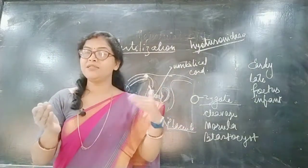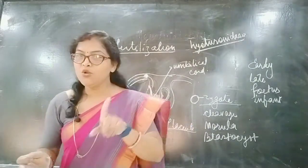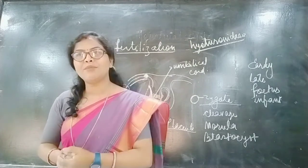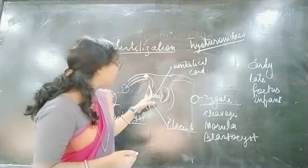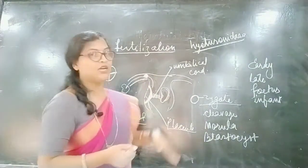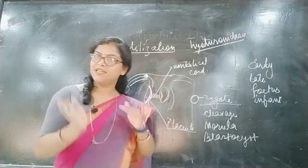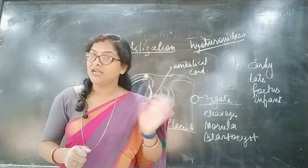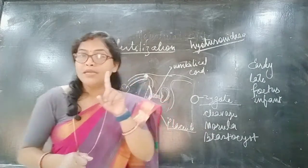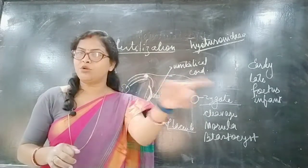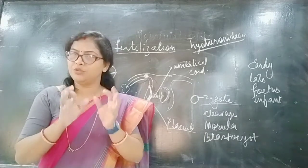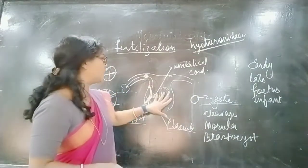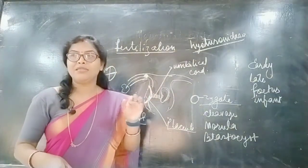The placenta is connected to the baby through a cord-like tubular structure, and this connection between mother and fetus is known as the umbilical cord. The function of the placenta is to provide glucose and oxygen — glucose for nourishment and oxygen for breathing and other processes — through the umbilical cord to the baby.